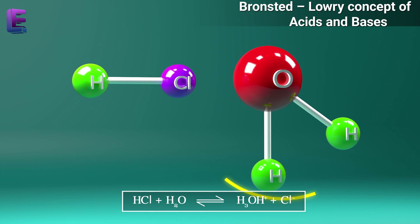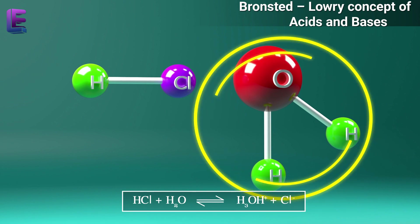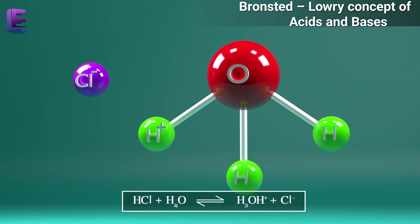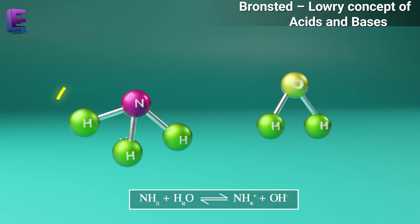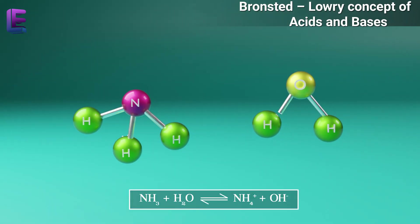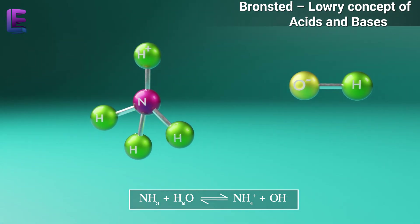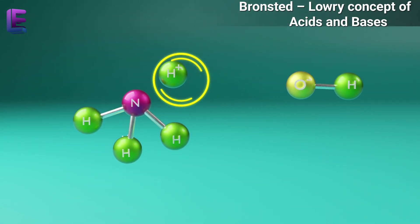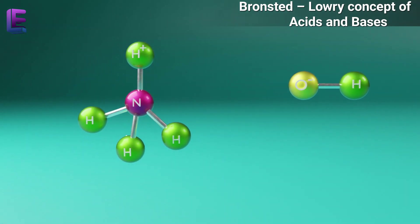HCl plus H2O gives rise to H3O-plus plus Cl-minus — on one side the proton is lost, on the other side it is gained. NH3 plus H2O gives rise to NH4-plus plus OH-minus — on one side the proton is lost, on the other side it is gained.